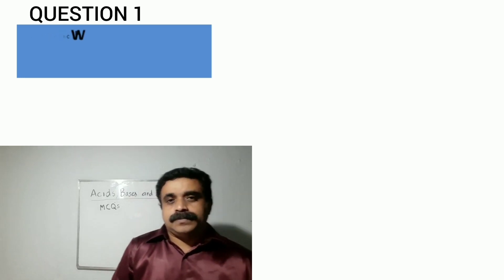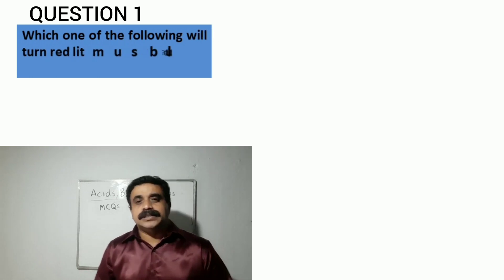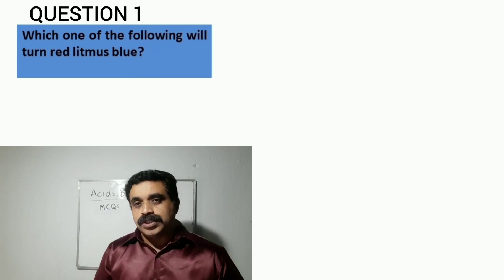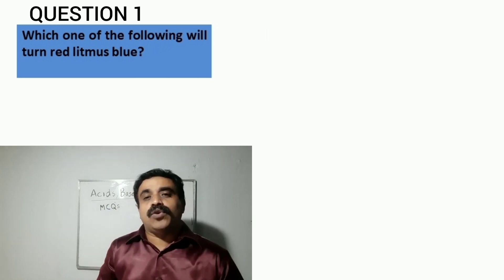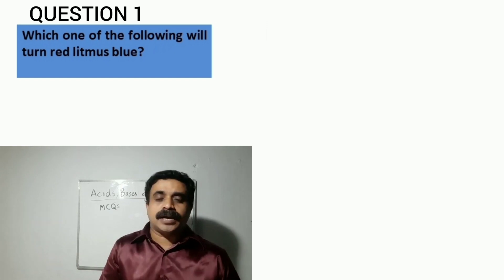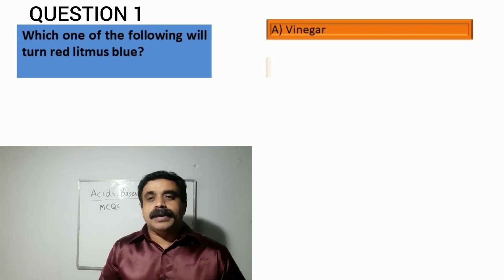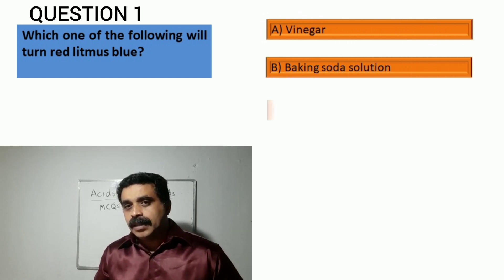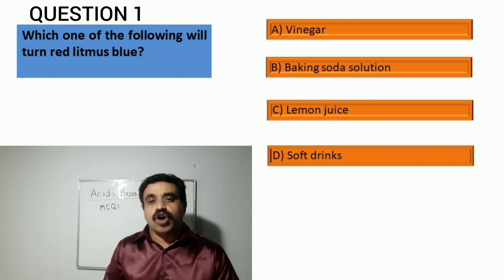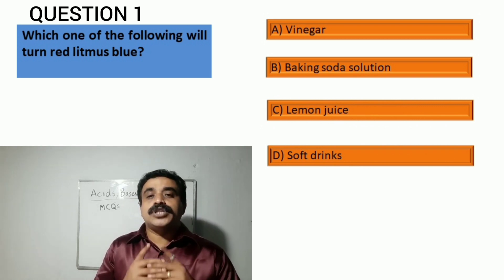Question number one: which one of the following will turn red litmus to blue? Option A: vinegar, option B: baking soda solution, option C: lemon juice, and option D: soft drinks.